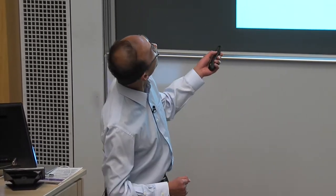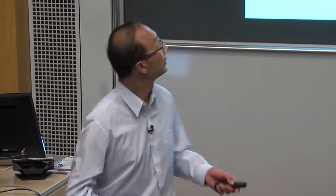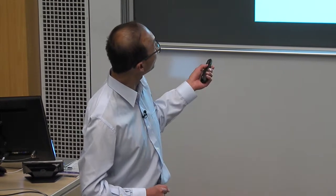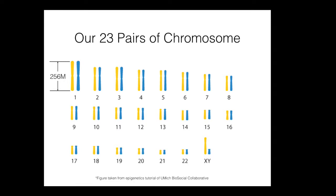So let me explain the haplotype phasing problem. It involves terminology perhaps not familiar to electrical engineers, but you need to know the language to understand why the problem is interesting. Every one of us has 23 pairs of chromosomes. They are of different length, numbered from one to 22 plus the sex chromosome in order of length. The longest is chromosome number one, with 256 million base pairs — A, G, C, T — down to the shortest at 50 million base pairs.